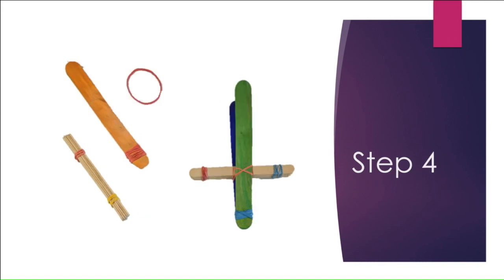Number four, you need to join those guys together with another band. Now you're actually going to loop the rubber band under your paddle pop stick pile there, then over the tongue depressors, then under and then over. And you do sort of a figure eight sort of thing there until they're nice and tightly bound together.